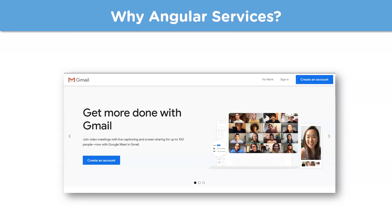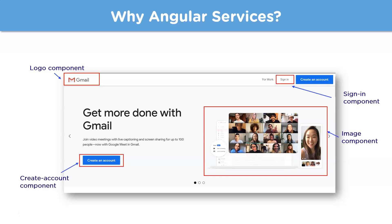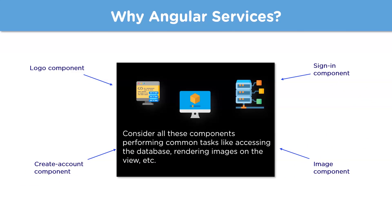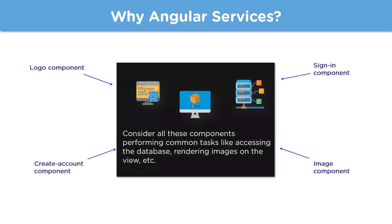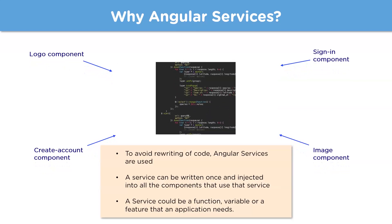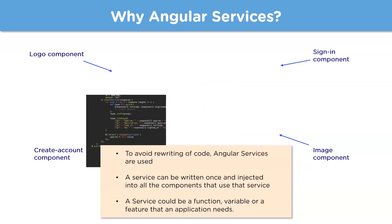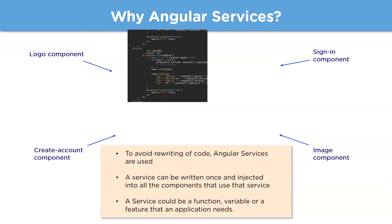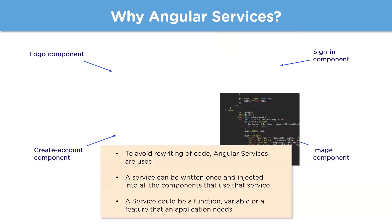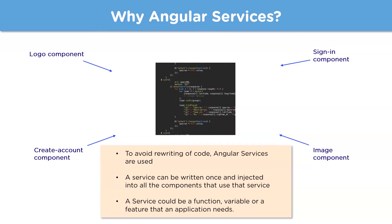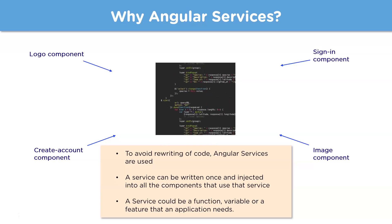An Angular app is divided into several components — for example, a logo component, a sign-in component, an image component, and a create account component. These components are standalone and each represents a part of the user interface. Now imagine if all of these components performed common tasks like accessing the database or rendering images. Instead of writing code for every component, you can make use of Angular services. A service can be written once and then injected into all components.